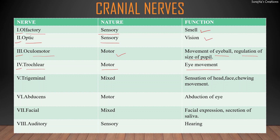The fifth cranial nerve is the trigeminal nerve. It is a mixed type of nerve, composed of both sensory and motor components. It is concerned with sensation of the head and face, and is also responsible for chewing movement — that is, sensation and motor function in the face and the mouth.